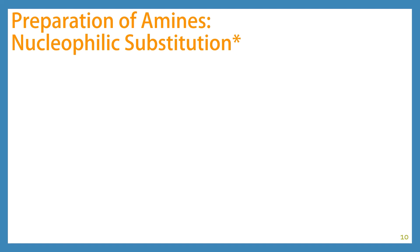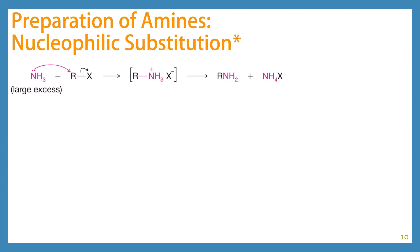Our next topic is the preparation of amines. Anything with an asterisk indicates old chemistry — things you are already familiar with. Our first route is through nucleophilic substitution. Remember that one potential issue with this is multiple alkylations. One way to avoid that is to put in a large excess of ammonia, so you have much less of your alkyl halide.